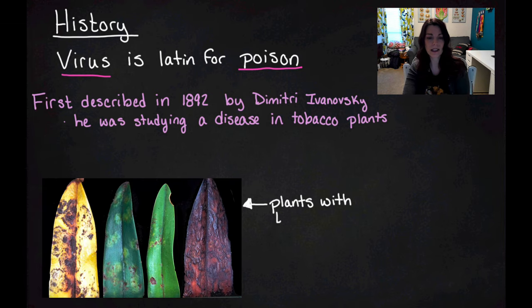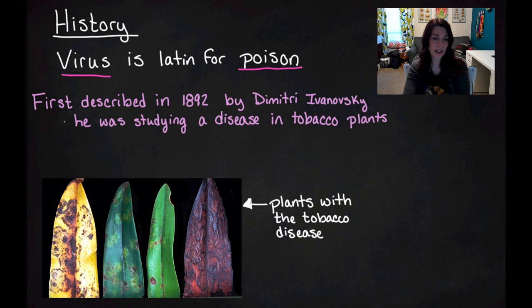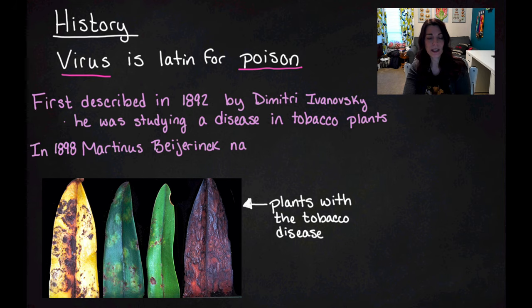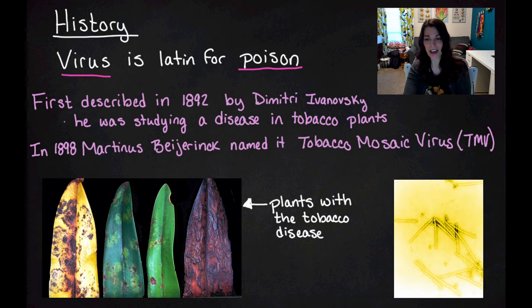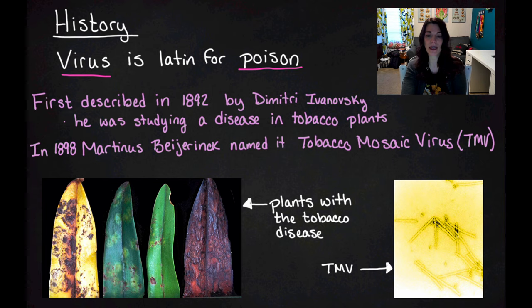The disease actually causes pretty significant damage to the leaves. Now we know this as tobacco mosaic virus, but at the time they weren't really sure what was happening. In 1898, Martinus Beijerinck named it tobacco mosaic virus. He actually thought that it was a poison being produced, and now we know that it is actually caused by this virus.